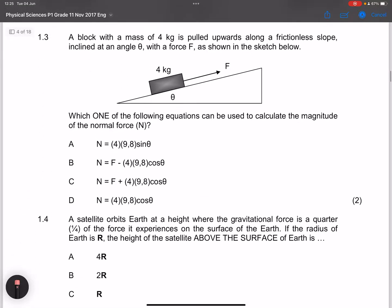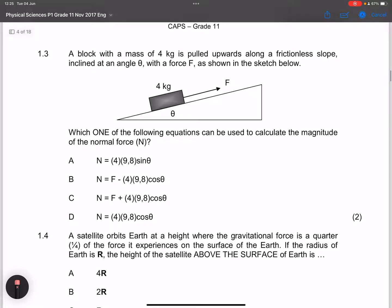Let's go to the next question. They say a block of mass of four kilograms is pulled upwards along a frictionless slope, inclined at an angle theta, with a force F as shown in the sketch diagram. They say which one of the following equations can be used to calculate the magnitude of the normal force.